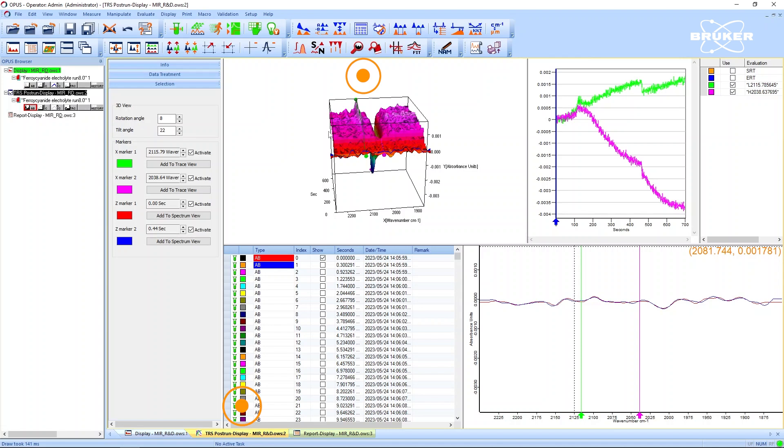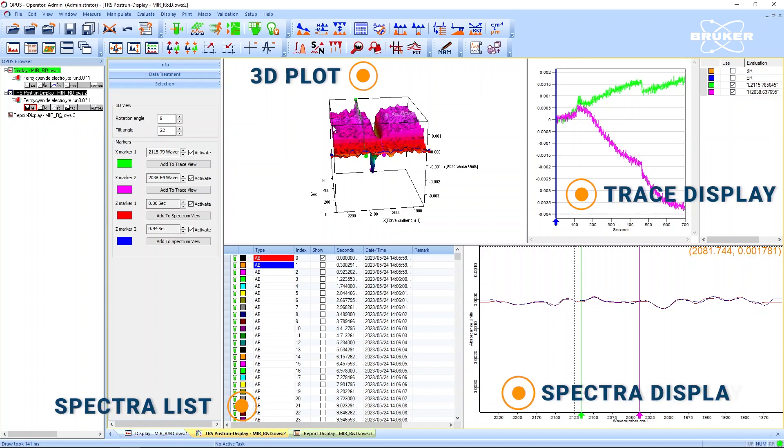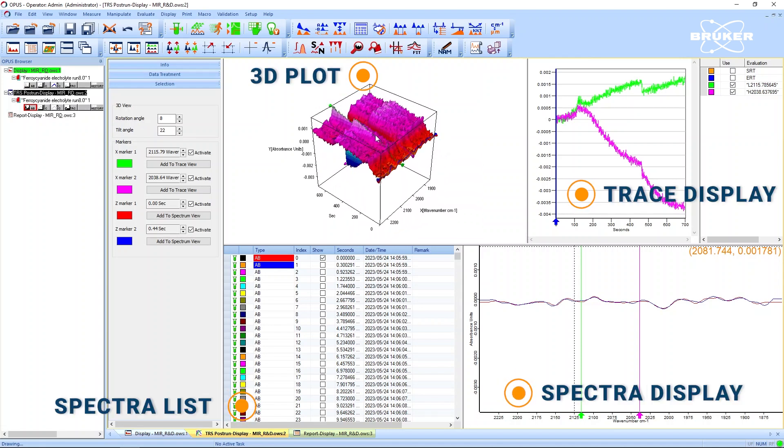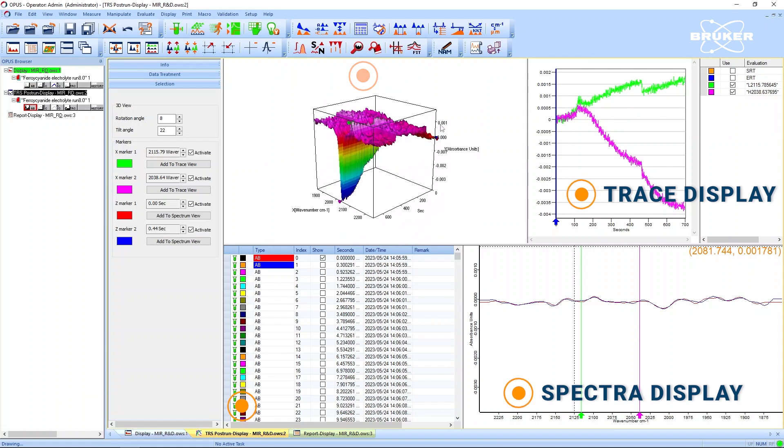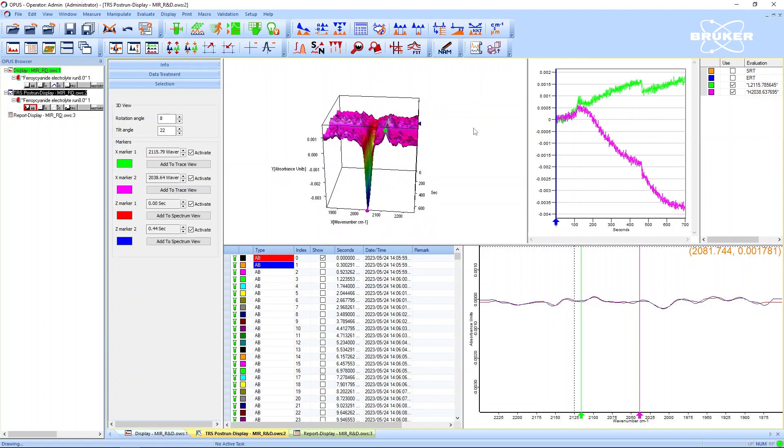Let's fast forward to the end of the measurement run. In the 3D plot, the trace displayed and the spectrum displayed, the progression of the reaction is evident. After the potential has been increased for about 150 seconds, the chemical reaction begins.